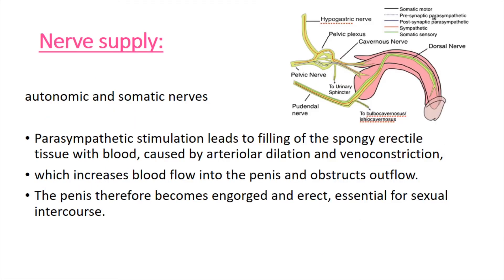The nerve supply of the penis involves autonomic and somatic nerves. Parasympathetic stimulation leads to filling of the spongy erectile tissue with blood, caused by arteriolar dilation and venous constriction — increasing blood flow into the penis and obstructing outflow. The penis therefore becomes engorged and erect, which is essential for sexual intercourse. The nerves involved include the dorsal nerve and autonomic and sympathetic nerves.